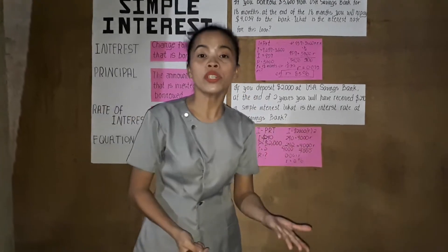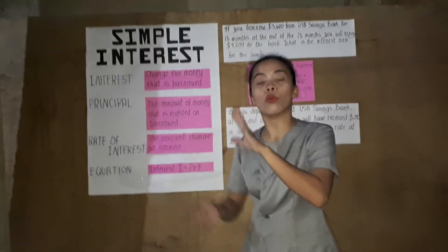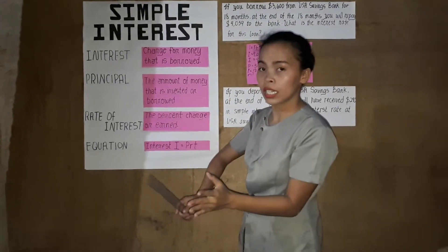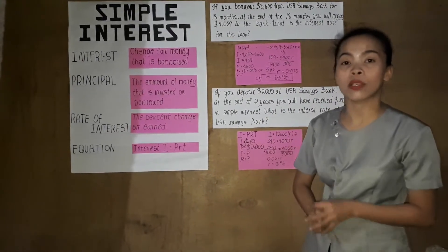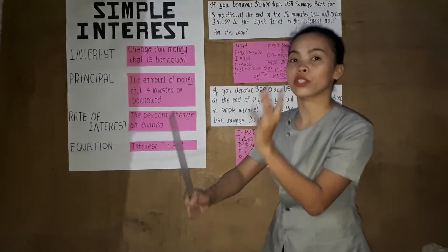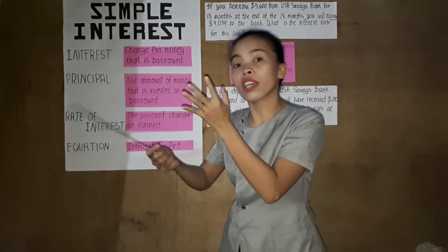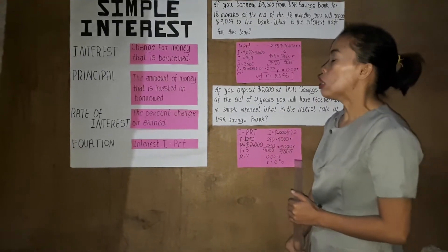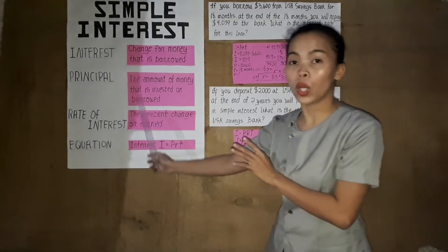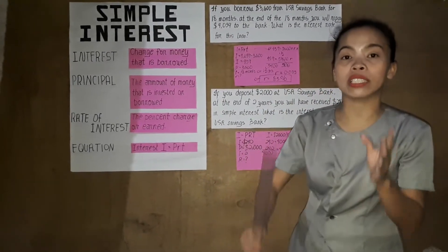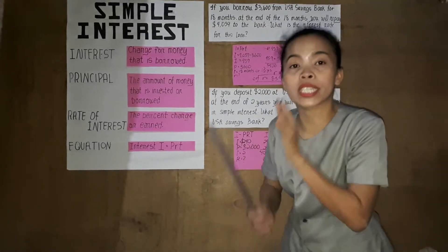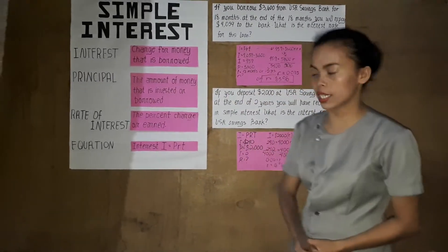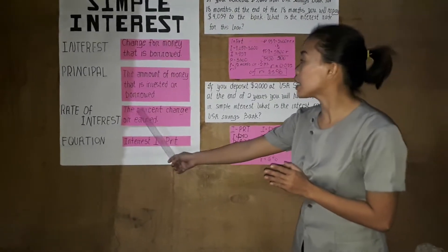So today we're going to tackle simple interest. From our story, we were talking about interest. So what is interest? Interest is a charge for money that is borrowed or invested. Another key term is principal — principal is the amount of money that is invested or borrowed. From our story, the principal is $100, while the interest is 15% of $100, which is $15. The rate of interest is the percent charged or earned — in our story, the rate is 15%.